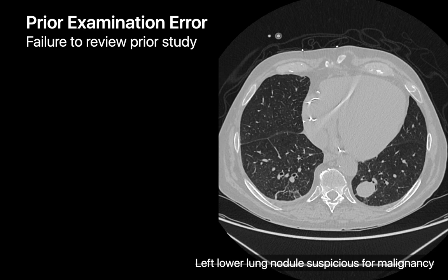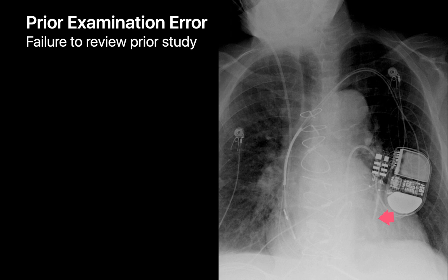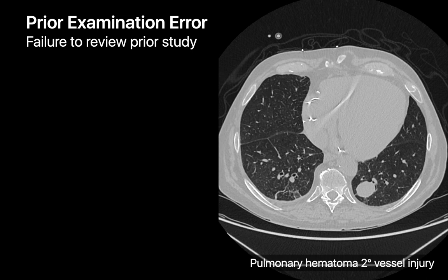Prior examination errors are errors made due to a failure to review a patient's prior studies or reports. This finding in a patient's posterior left lower lobe was interpreted as a suspicious lung nodule. However, a relatively recent prior chest x-ray showed that the patient had had the tip of a pulmonary arterial Swan-Ganz catheter inserted very peripherally in this exact region, and the nodule actually turned out to be a pulmonary hematoma due to pulmonary artery vessel injury.